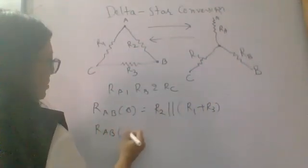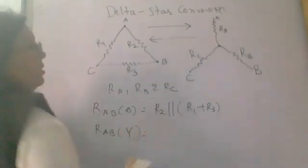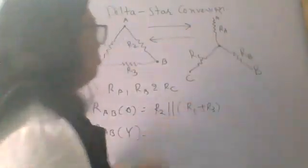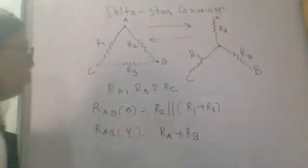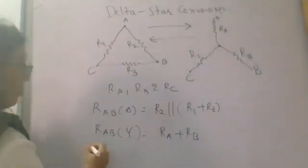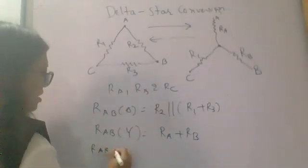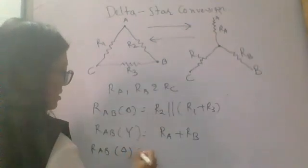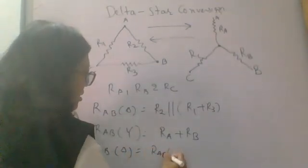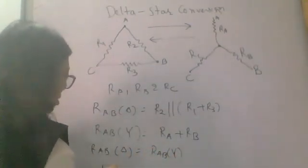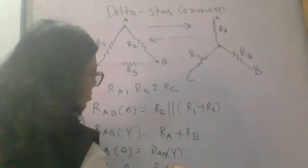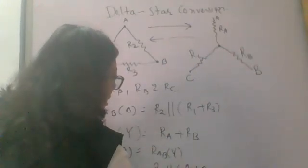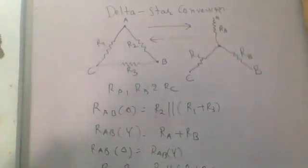The same terminal resistance in star between A and B is RA plus RB. Both systems are equal, so RAB in delta equals RAB in star. Therefore, RA plus RB equals R2 parallel (R1 plus R3). This is equation number 1.